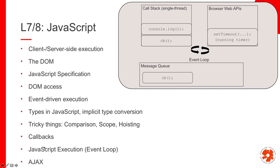We discussed callbacks — the way of reacting to the results of asynchronous execution — which is a very important concept. Related to that, we explained why JavaScript has this asynchronous behavior: external web APIs run outside the single thread, which can make behavior seem strange. Finally, we covered Ajax — Asynchronous JavaScript and XML — a technique to send requests after the page is already loaded, allowing new data to be fetched from the server without reloading the website.